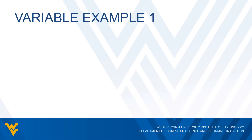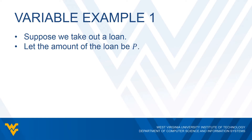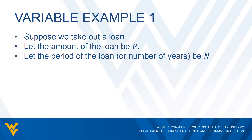Let's take a look at an example of where variables would be very useful. Let's suppose we take out a loan. We need to get some information: we need to know the amount of the loan — we're going to let P be that amount — the period of the loan, or the number of years it's going to take to pay back the loan, which we'll let be N, and then the interest rate, which we'll let be R. What we want to do is figure out how much we pay every month in order to pay back the entire loan.